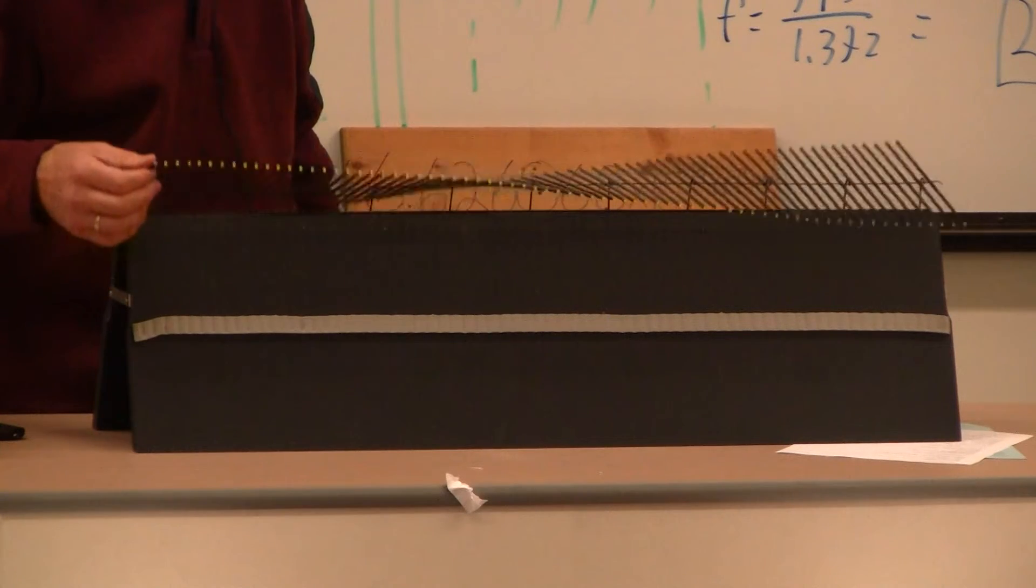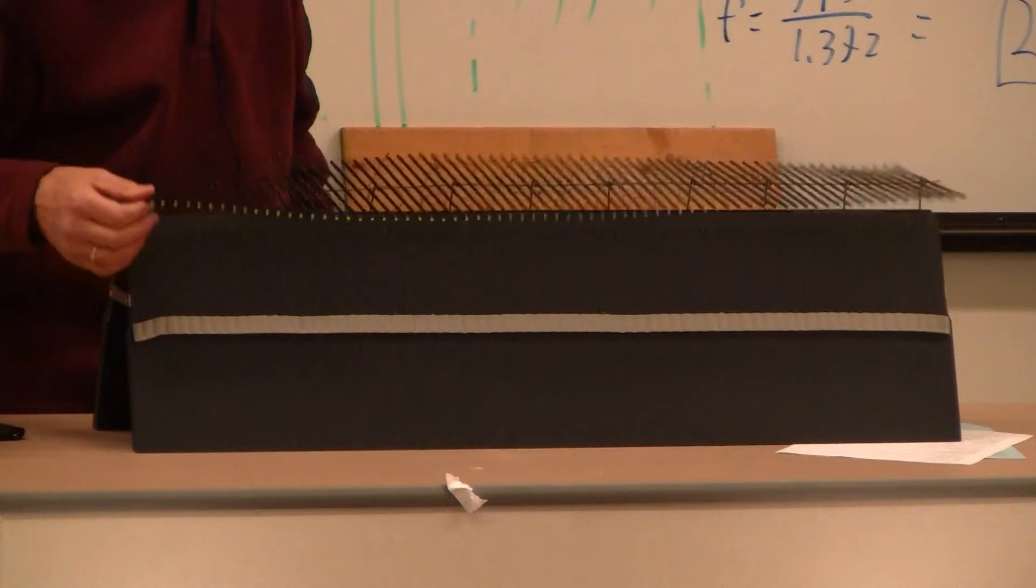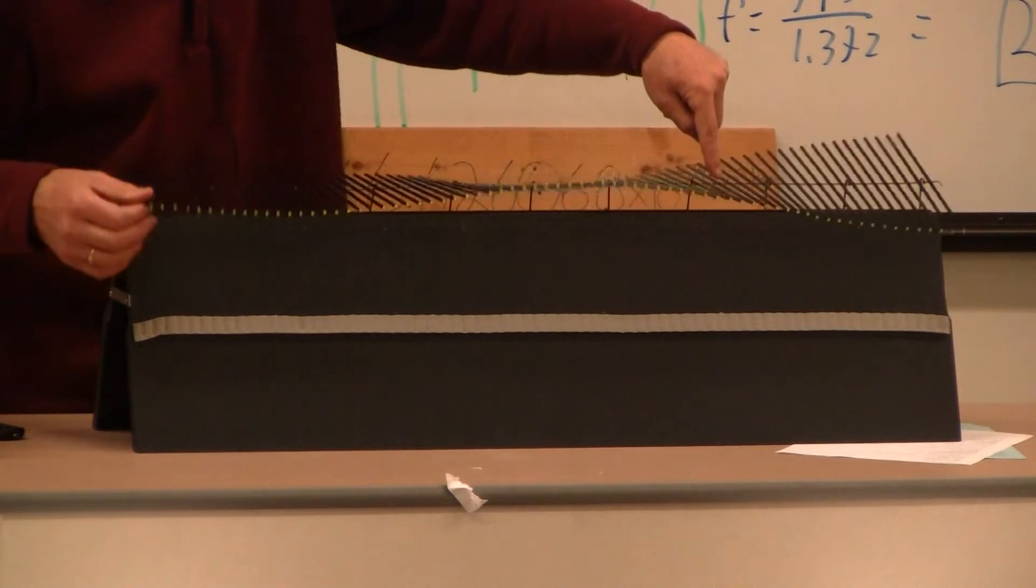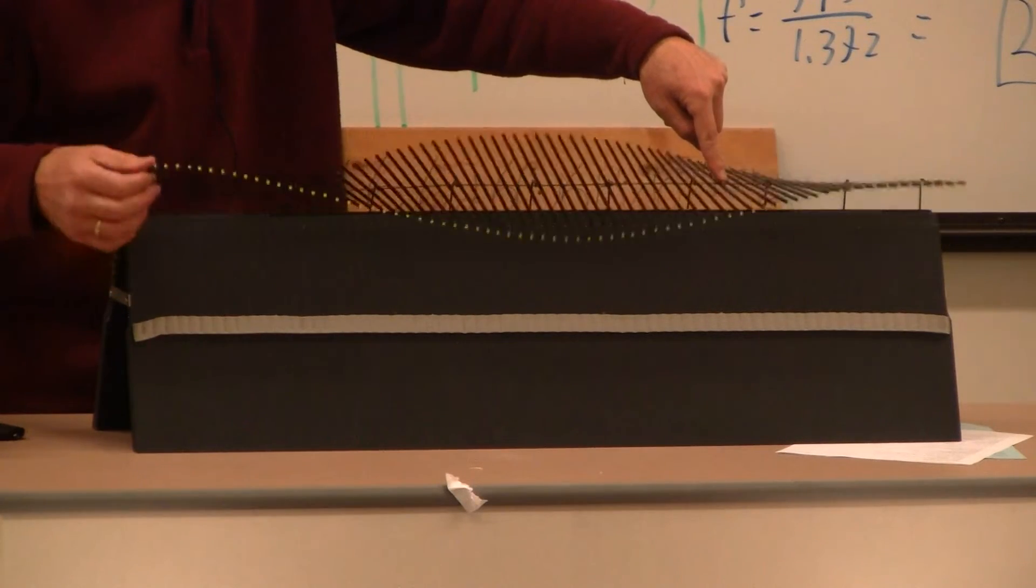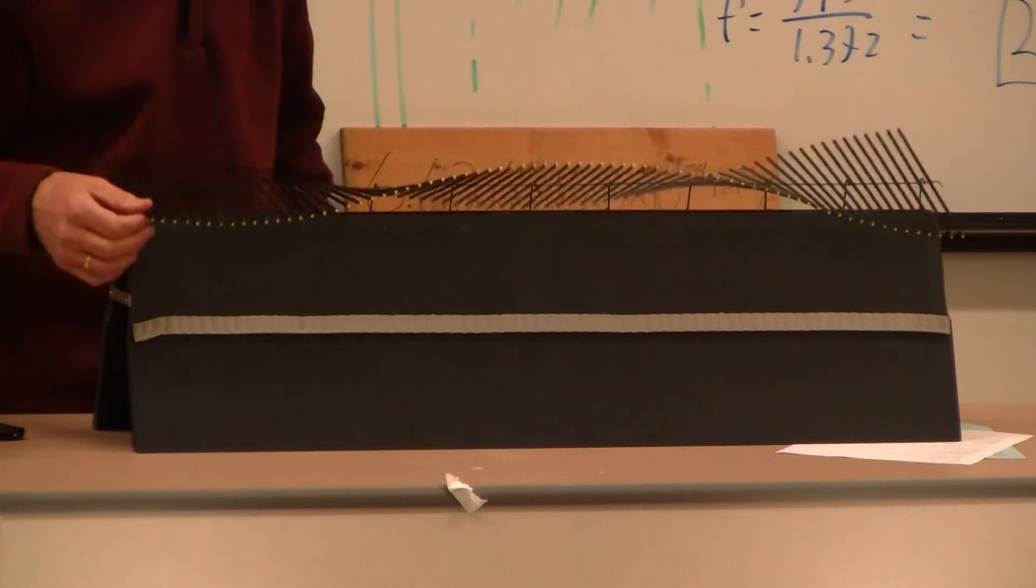These are transverse. Now we'll do the next mode, which is double that frequency. See, now there's a node here, there's a node there, anti-node here, anti-node at both ends.